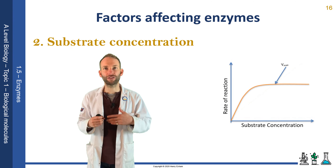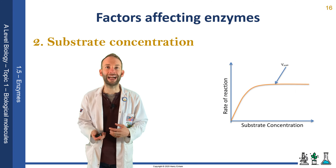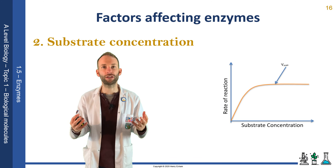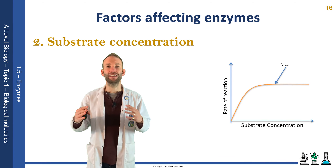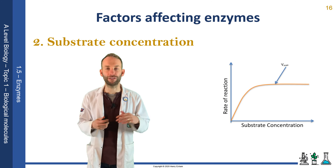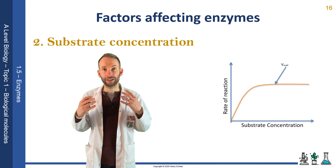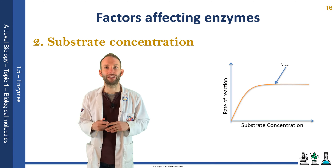If you increase the amount of substrate, there's more for the enzyme to collide with, so the rate increases. However, at a certain point all the enzyme active sites are occupied — they're all busy. It doesn't matter if you keep adding more substrate; the enzymes can't work any faster and the graph will plateau. The rate levels off and we call that Vmax — the maximum rate of reaction with that concentration of enzymes. If we add more enzymes, we can push beyond Vmax, but otherwise that's the limit.